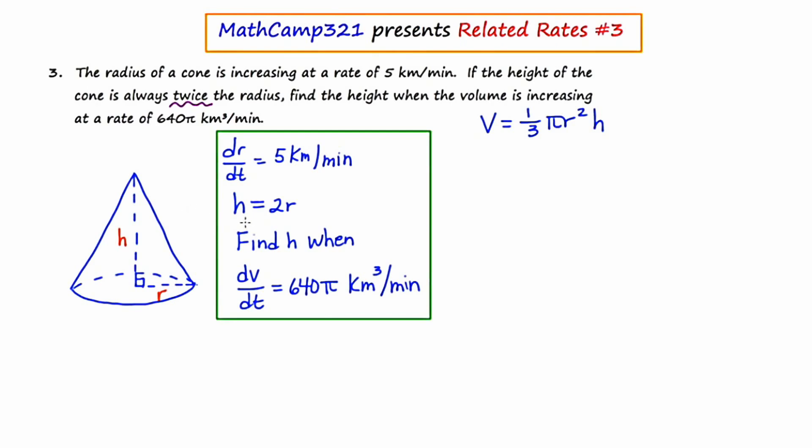So I'm going to go ahead and replace H with 2R because H is always 2R. Cleaning this up, I end up getting volume equals two-thirds π R cubed. And these are just all rewrites of the original problem. I still have not taken the derivative.